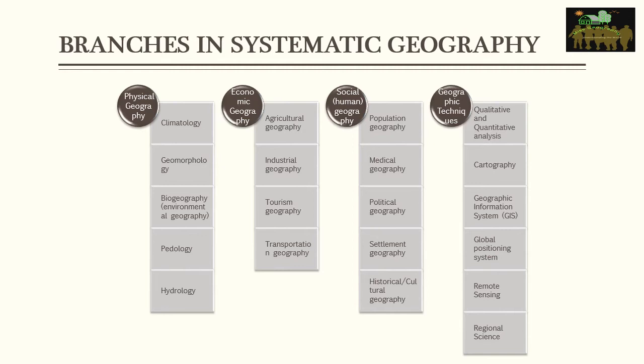These are all branches in systematic geography because they can be studied independently. For example, you can study the climate of an area, the geomorphology of an area, or the population of different places — each as one phenomenon. Geographic techniques include qualitative and quantitative analysis, cartography, GIS, GPS, remote sensing, and regional science. They all follow a process and a scientific method, which is why they fall under systematic geography.